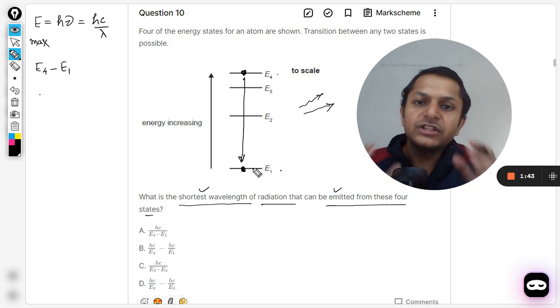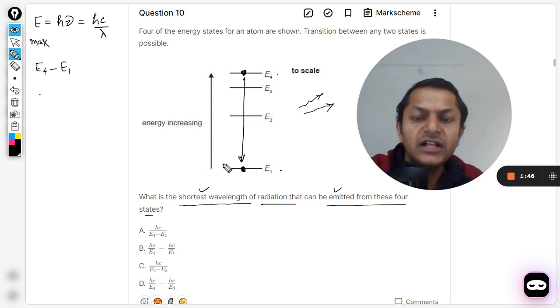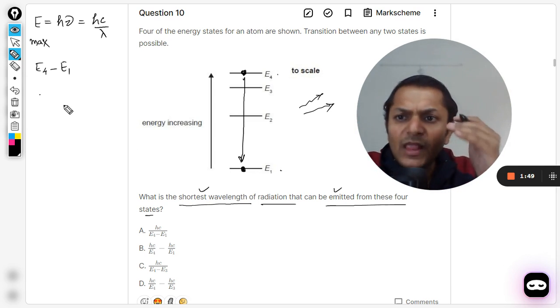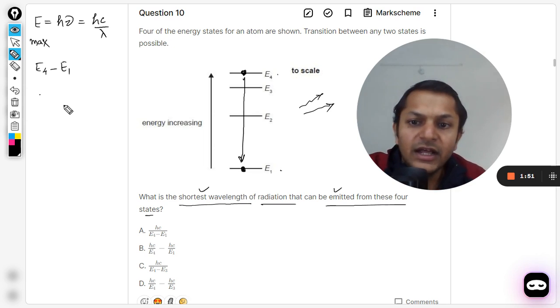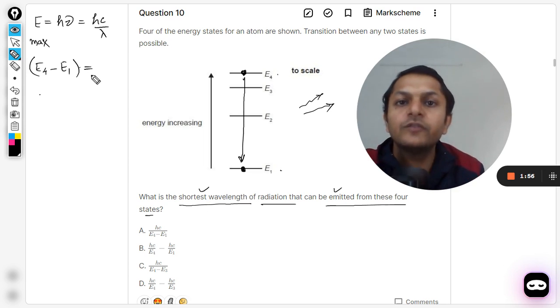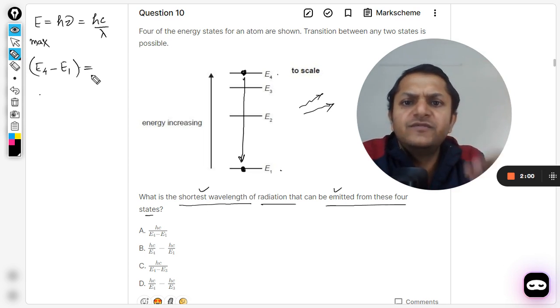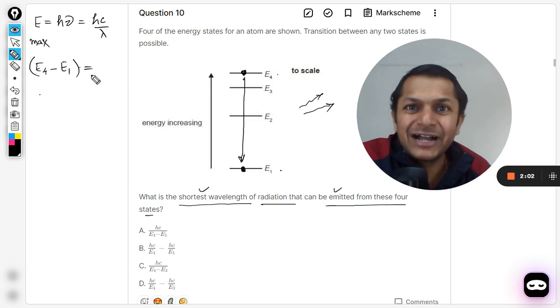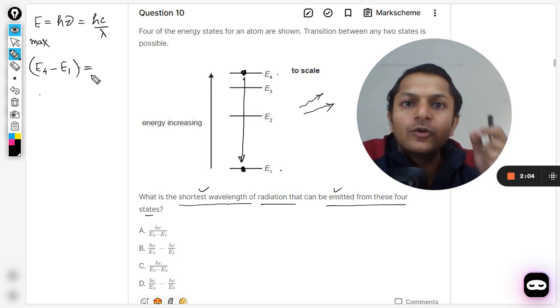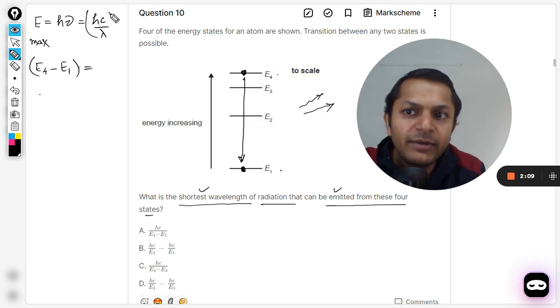So this is the relaxation that is taking place. E4 minus E1, now this is the total energy. This is one of the principles of Bohr that the total energy which is given out by the electron will be given out in one packet of energy. It cannot create two packets or three packets. So one packet of energy is given by hc by lambda.